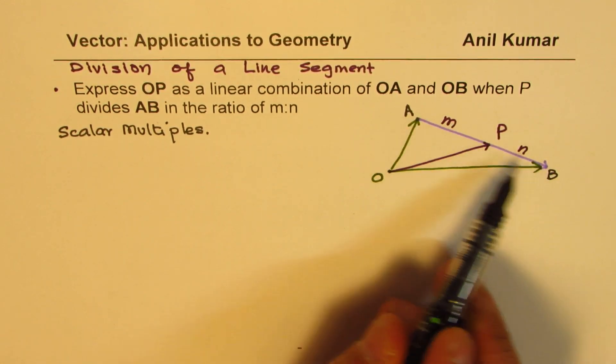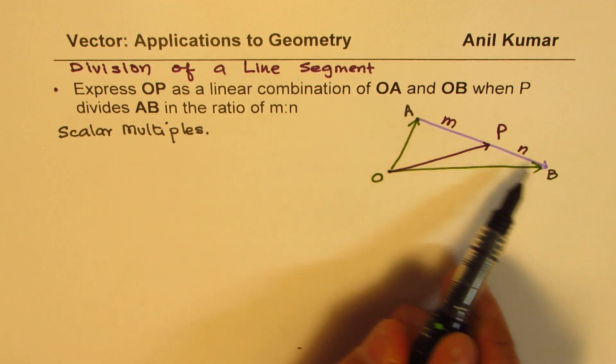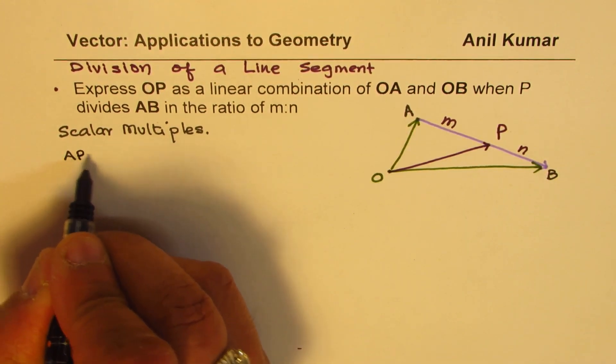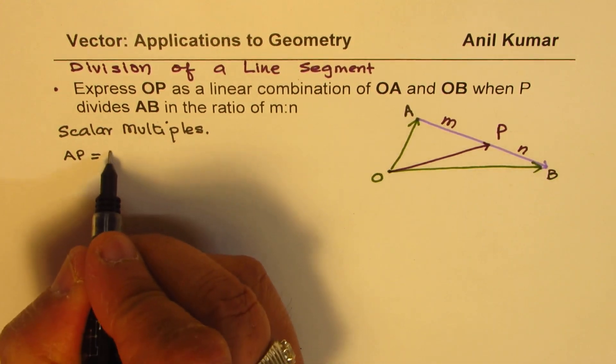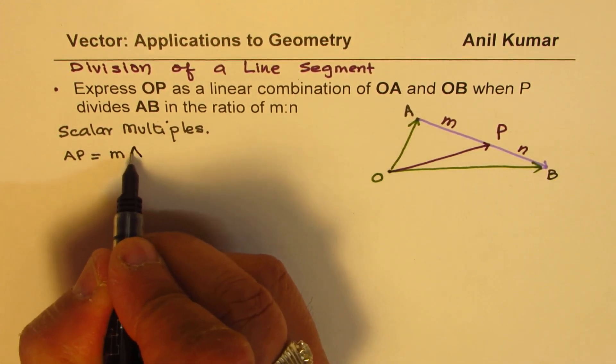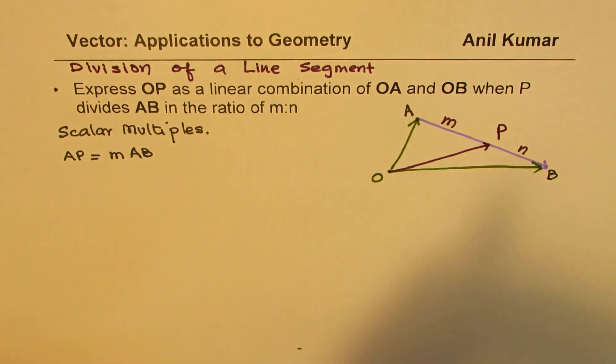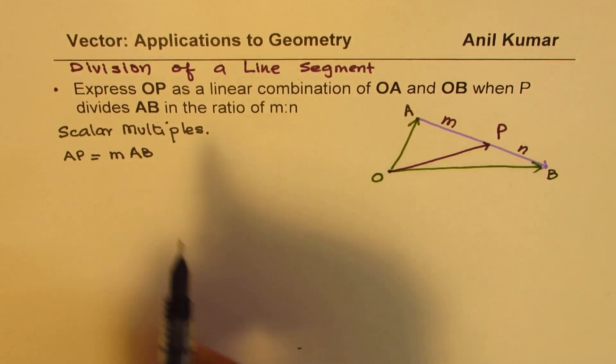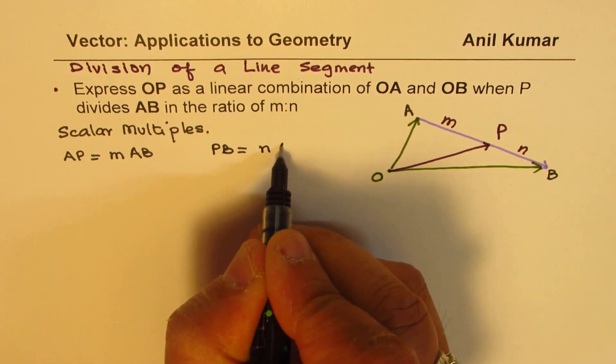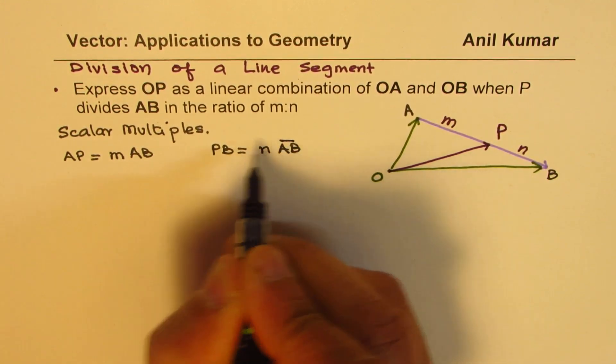Let us look into what AP is and what is PB. AP and PB are in the same line as AB. They are collinear. So we could write AP as equal to M times AB. We could write PB as N times AB. These are vectors.